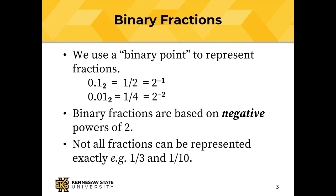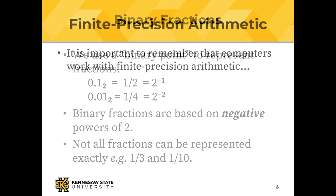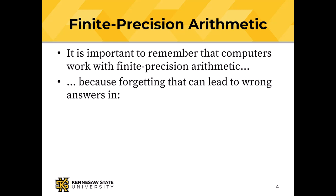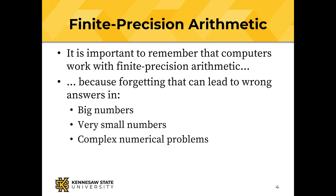As with decimal numbers, not all fractions can be represented exactly using the binary fraction form. One-third can't be represented exactly, and interestingly, one-tenth can't be represented exactly either. It's important to remember that computers work with finite precision arithmetic — arithmetic on a fixed number of digits — because forgetting that can lead to wrong answers when working with big numbers, with very small numbers, or with complex numerical problems.